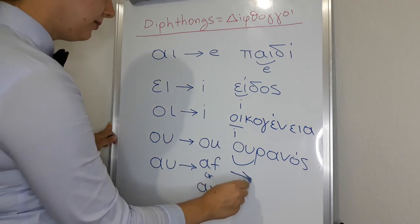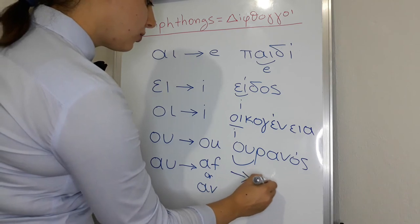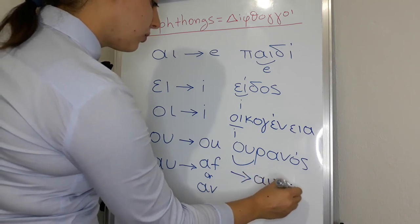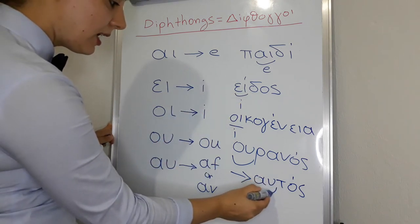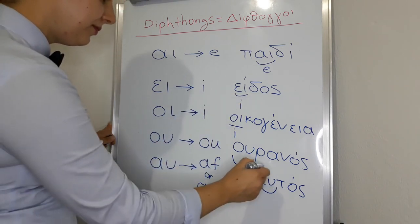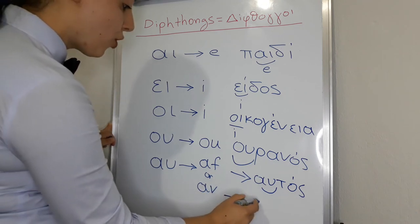For example, aftos. This one. Av. Okay and avgo, egg.